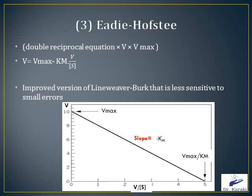The Eadie-Hofstee plot is also used to determine kinetic parameters. It is a more accurate linear plotting method where V is plotted against V/[S]. The Eadie-Hofstee equation is obtained by multiplying the Lineweaver-Burk equation by V × Vmax: V = Vmax − Km × (V/[S]). A plot of V against V/[S] yields Vmax as the y-intercept, Vmax/Km as the x-intercept, and −Km as the negative slope.